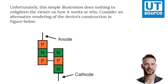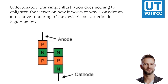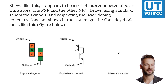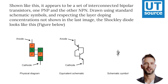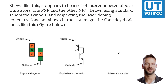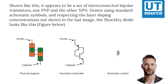Consider an alternative rendering of the device's construction in the figure below. Shown like this, it appears to be a set of interconnected bipolar transistors, one PNP and the other NPN, drawn using standard schematic symbols and respecting the layered doping concentrations not shown in the last image. The Shockley diode looks like this figure below.